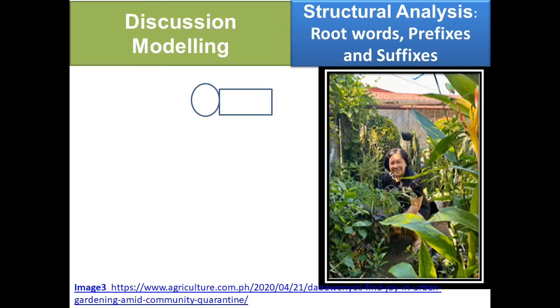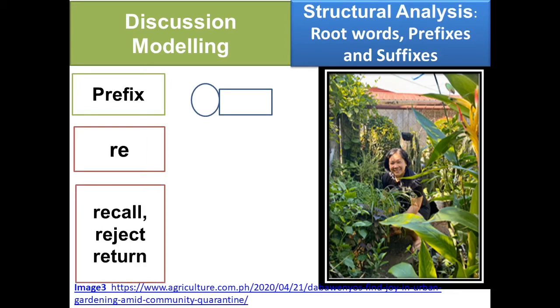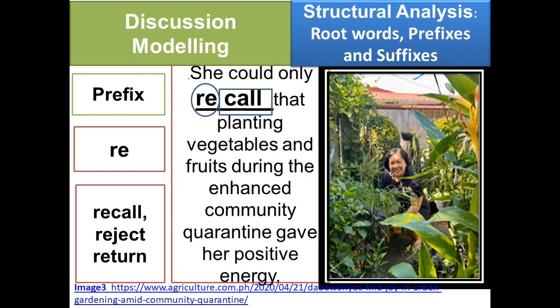Let's have the last one. Prefix 're.' Example words: recall, reject, return. Example sentence: She could only recall that planting vegetables and fruits during the enhanced community quarantine gave her positive energy. As you can see, the underlined word is recall. The root word is call, and the prefix is 're,' which means again. The word recall means to remember something. I hope everybody understood about prefixes.